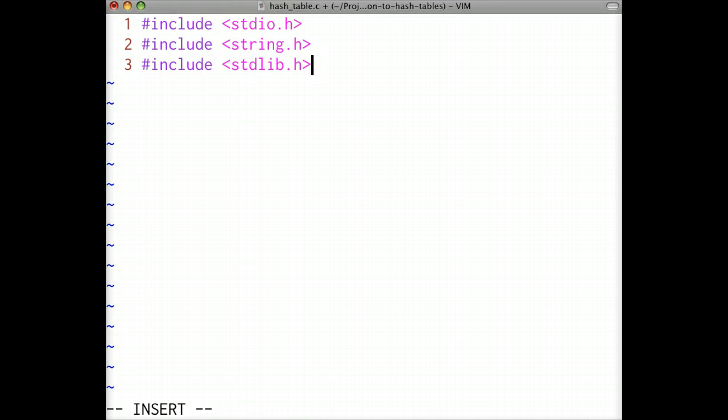Next we'll define a macro for describing the size of our hash table. The right size depends on the number of keys and the desired hash table performance, but one bucket per key might be a good starting place. Notice that we choose to make the hash table size a power of 2.